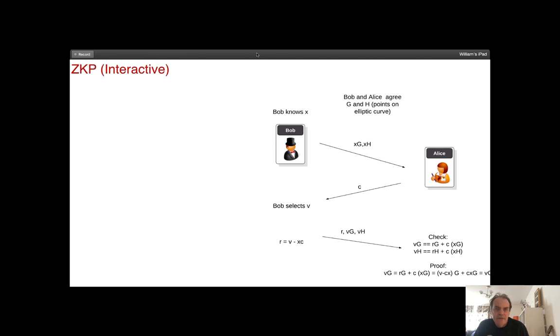Within the Fiat-Shamir heuristic, if we're using the elliptic curve, we start off with Bob having his secret. Bob and Alice agree to two points in the elliptic curve, g and h, so that Bob creates x times g and x times h. Alice cannot determine the value of x. It is too difficult from a computation point of view to work out what the original value of x is.